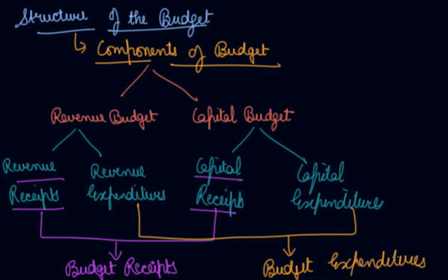So your receipts include two components — revenue receipts and capital receipts — and your budget expenditure includes two components — revenue expenditures and capital expenditures. This is the structure of the budget. Now let us study capital receipts in this video.